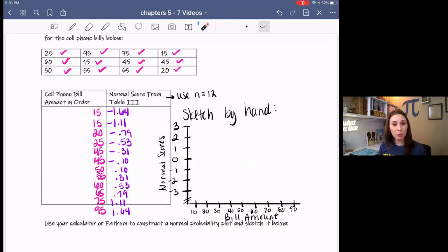But I want you to plot these points. So these are points. This point is over 15 down at negative 1.64. This one is over 15 down at negative 1.11 and so on. So plot all of these points and then see kind of what it looks like. And then come back and check with me.